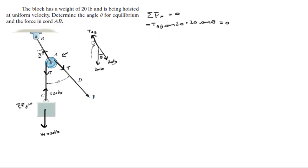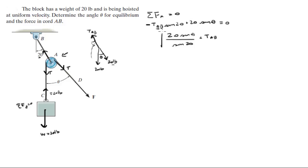So you know that 20 sine of theta over sine of 20 is equal to the tension in AB. That's Equation 1 — solving for T_AB.